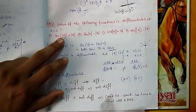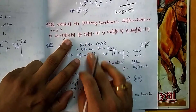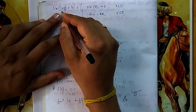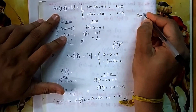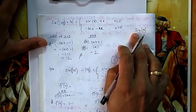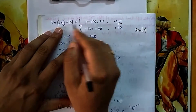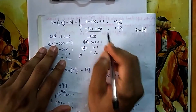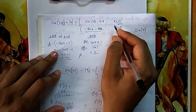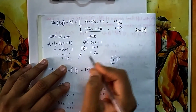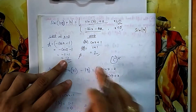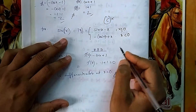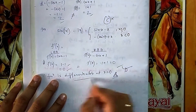Options A and B are both not differentiable at x equal to 0, so they are eliminated. For sin|x| plus cos|x|: sin|x| is not the same as sin x, so we check. Left-hand derivative at 0 minus gives −2 while right-hand derivative gives a different value, so option C is not differentiable. For option D, the left-hand and right-hand derivatives at 0 are both 0, so it is differentiable. Answer is option D.